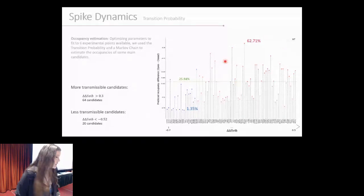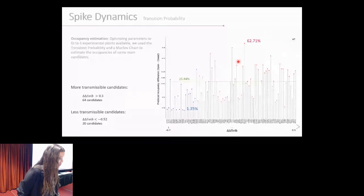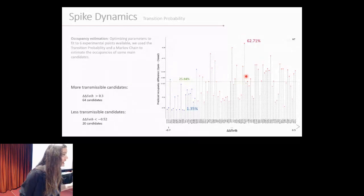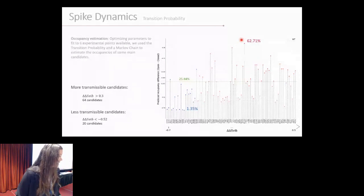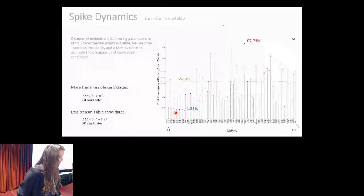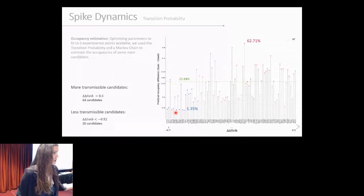We used that to calculate an open occupancy estimation for those 84 candidates that I'm showing. For several of our top candidates that you see in red, we had actually a larger open occupancy than wild type that is around 25%, including a lot higher for the position N501. Specifically, we got open occupancy estimations of up to 60%. For comparison, our bottom candidates, we almost created a locked state with open occupancy around 1%.